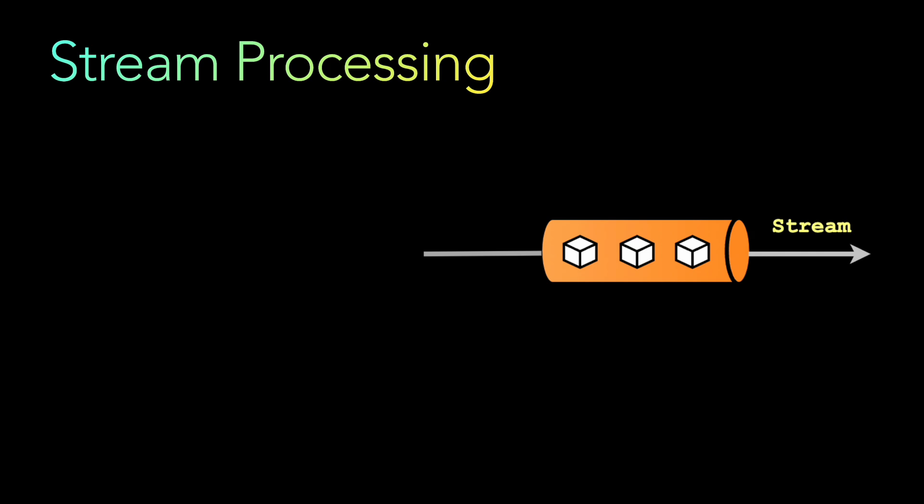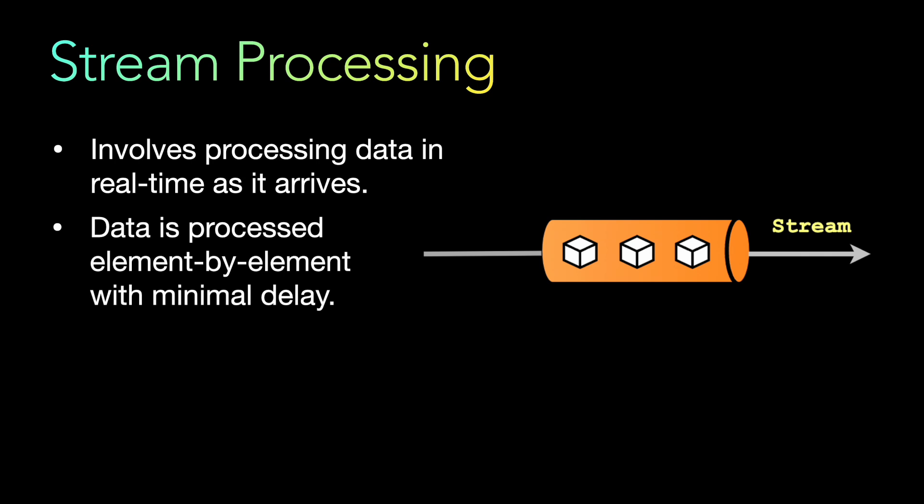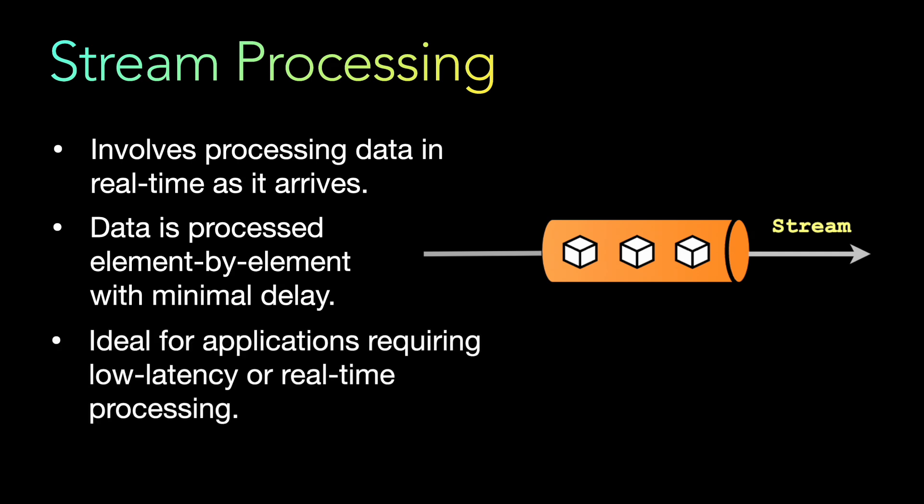Stream processing involves processing data in real time as it arrives — there is no lag or wait. Data is processed element by element with minimal delay. It's not like handling a batch; because data comes in the form of a stream, you process one by one with minimum delay. The maximum delay is the time it takes to process one element. It is ideal for applications requiring low latency or real-time processing.